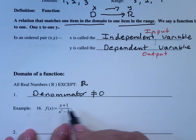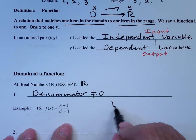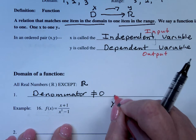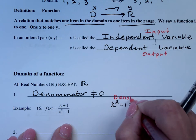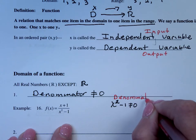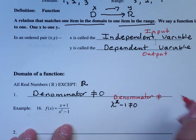So for example, if I had x plus 1 over x squared minus 1, we'd say that x squared minus 1 can't be zero. Or what I would normally do is this, denominator can't be zero.